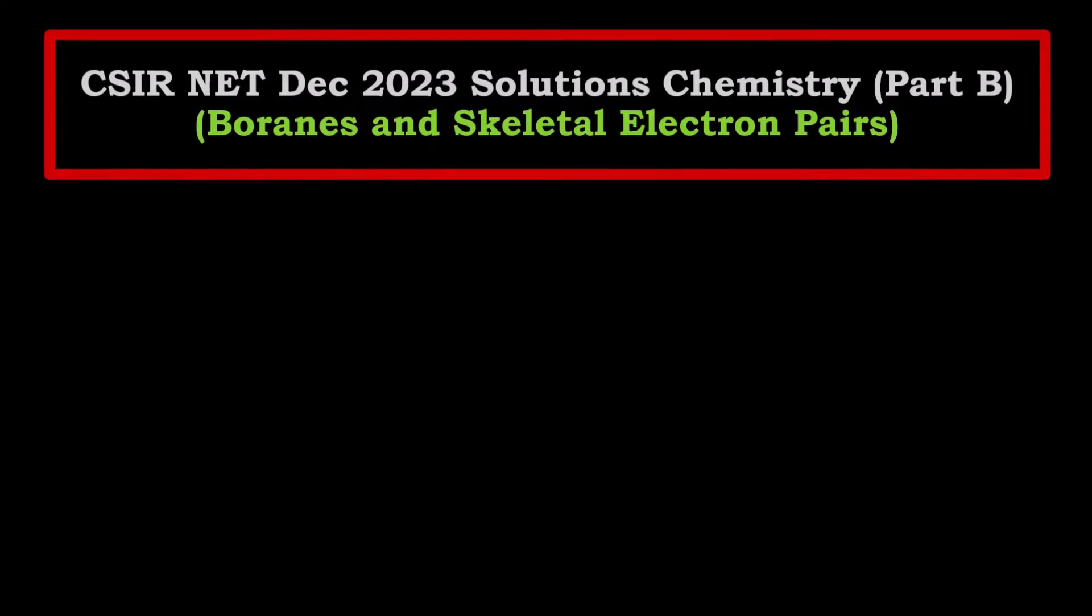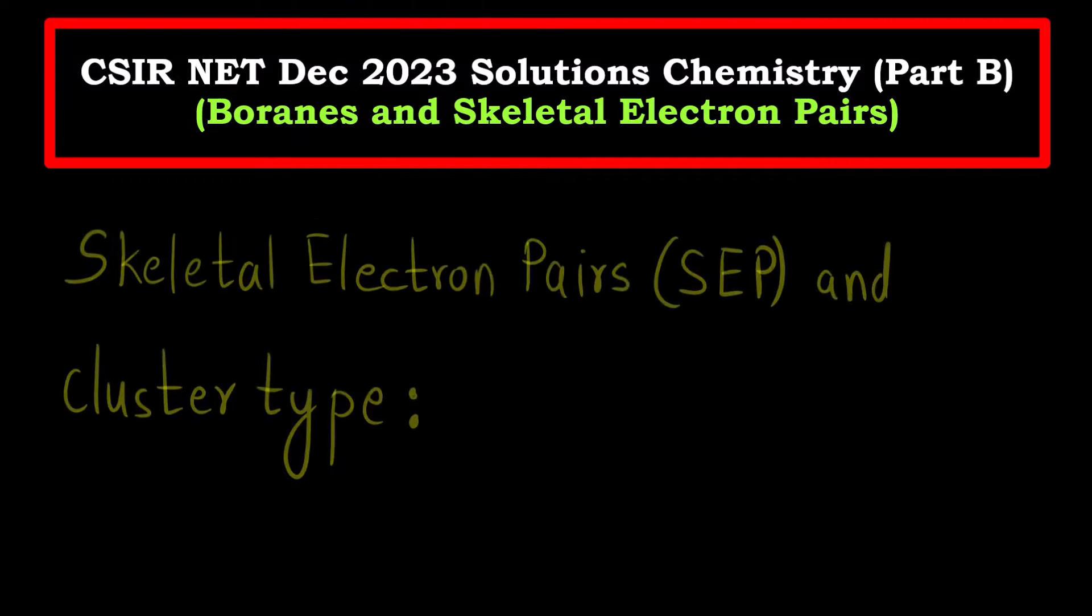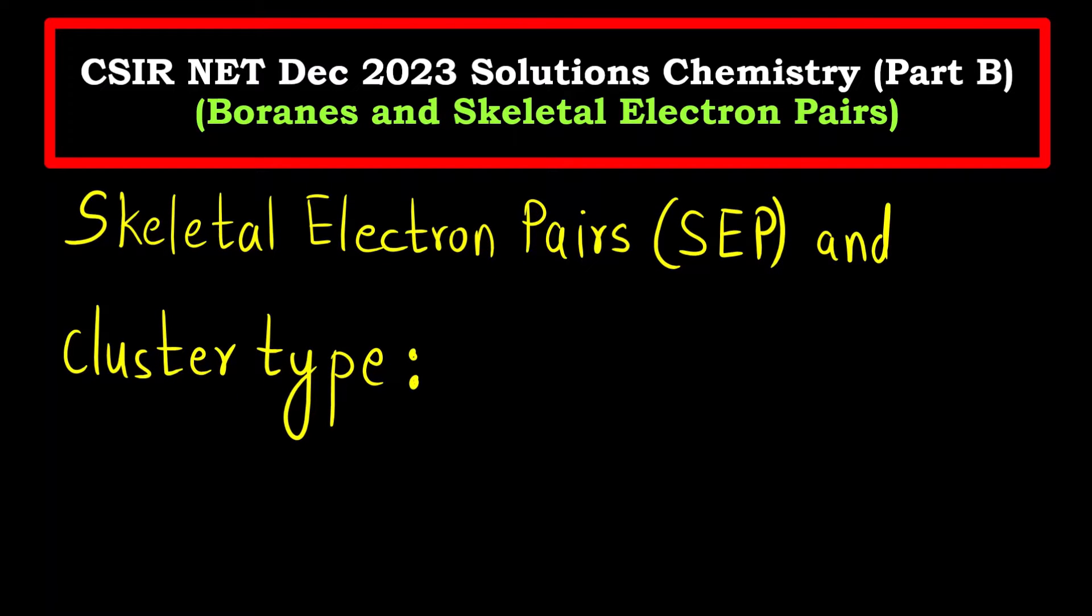Hello everyone, welcome to Chemazon Complete Chemistry. In this video we are going to solve some more questions of part B. We have to calculate the skeletal electron pairs and cluster type. This is based on boranes.